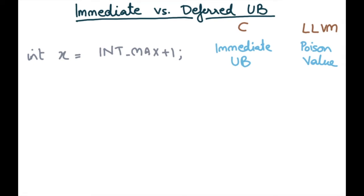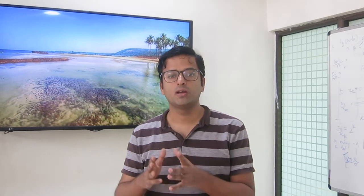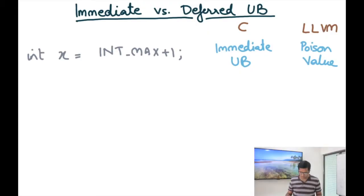So now we've discussed the poison value and its associated operational semantics and also the motivation for the use of poison value. Today I'm going to introduce another terminology that is used for this kind of undefined behavior, weak form of undefined behavior such as poison values, and that is called deferred undefined behavior versus immediate undefined behavior.